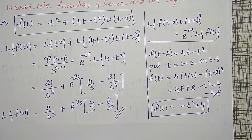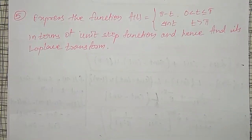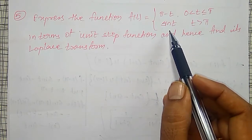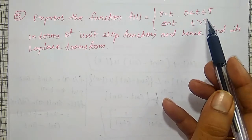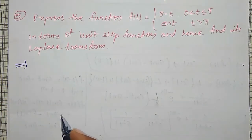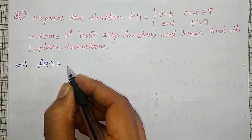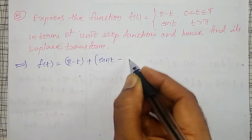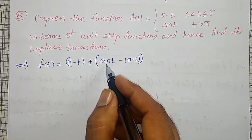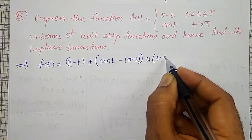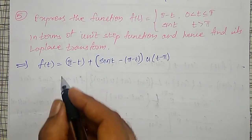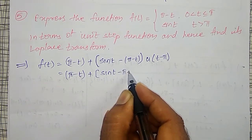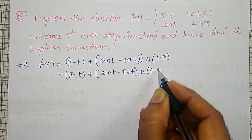Another example: express f(t) = π − t for 0 < t ≤ π and sin(t) for t > π, in terms of unit step function. Here π is the discontinuous point. Therefore f(t) = f1(t) + [f2(t) − f1(t)] · u(t − π) = (π − t) + [sin(t) − (π − t)] · u(t − π), which simplifies to (π − t) + (sin t − π + t) · u(t − π).